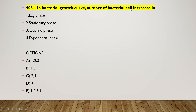Next question: in a bacterial growth curve, the number of bacterial cells increases in — (1) lag phase, (2) stationary phase, (3) decline phase, (4) exponential phase. The right answer is option D — the exponential phase is the right answer.